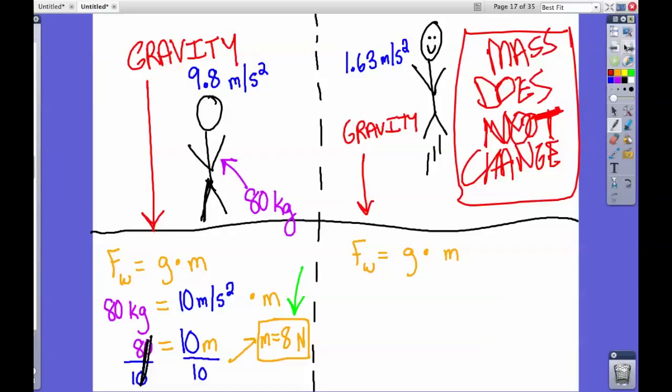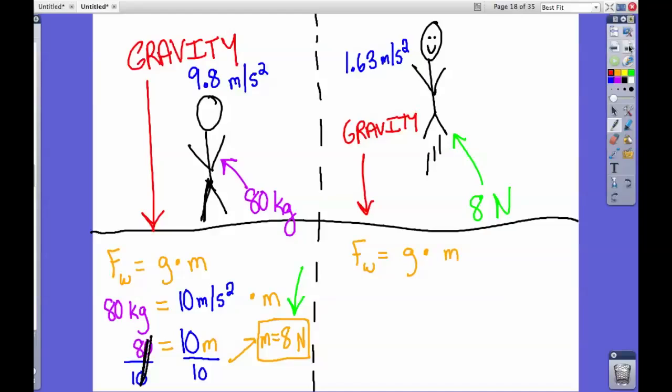We know that my mass on Earth is 8 newtons, so my mass on the Moon is also 8 newtons. We put that in for m. We know that the gravity on the Moon is about 1.63 meters per second squared. When we multiply those together, we get about 13.04 kilograms.